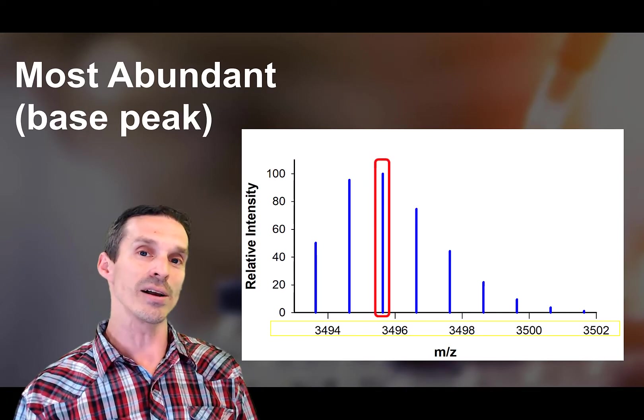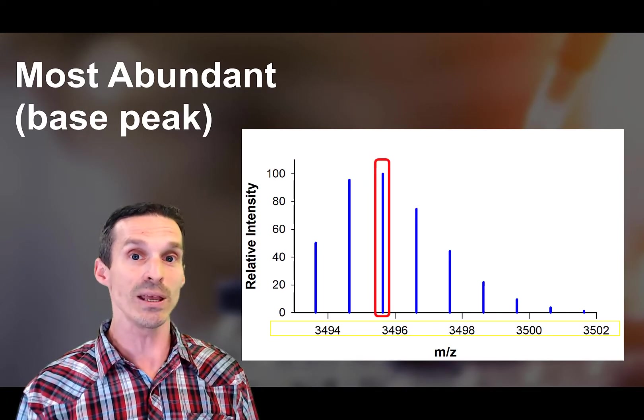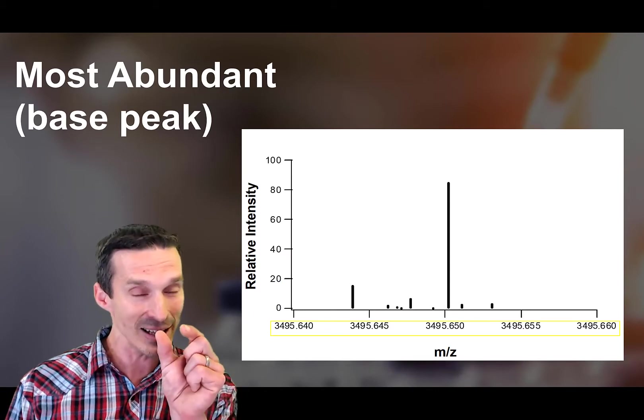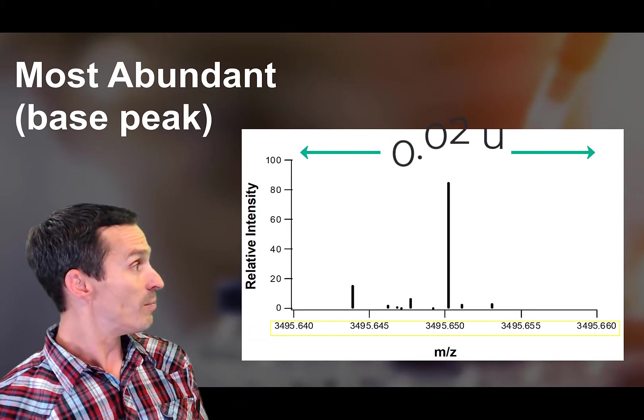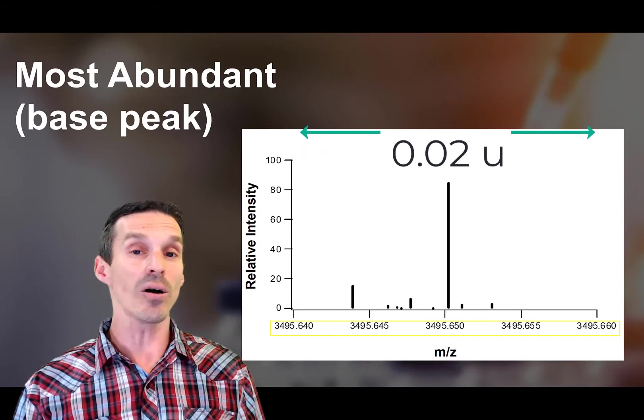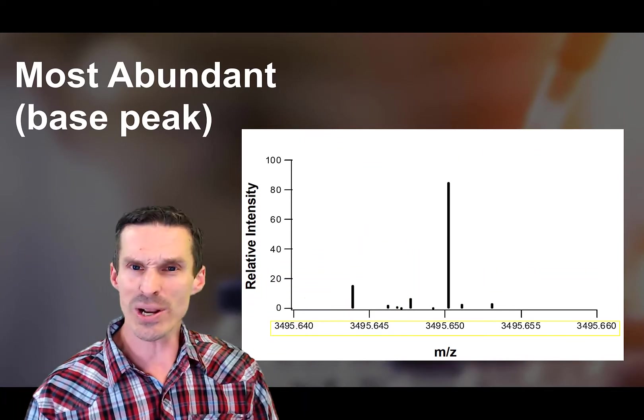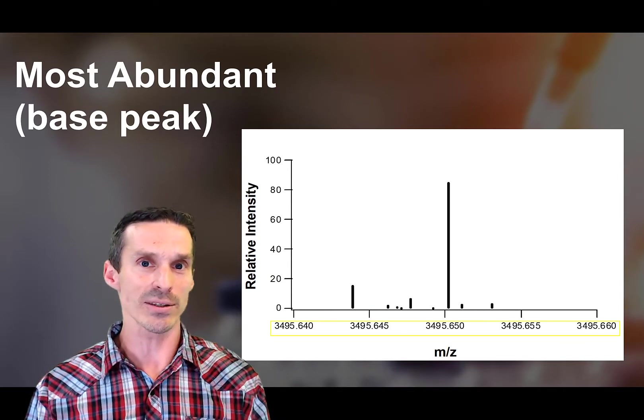So when you're looking at the mass scale and you were to like zoom in on that isotope, if you could really zoom in, this is what you would see. Now notice the mass scale, it's just a tiny little fraction in the width. But you can see that there's actually all kinds of different isotopes that are all clustered together.